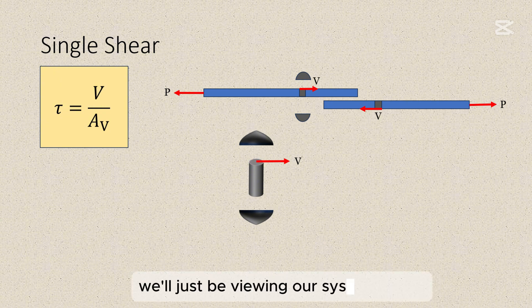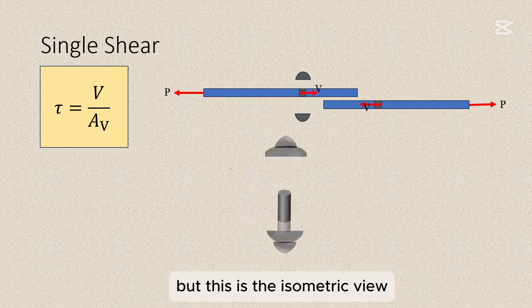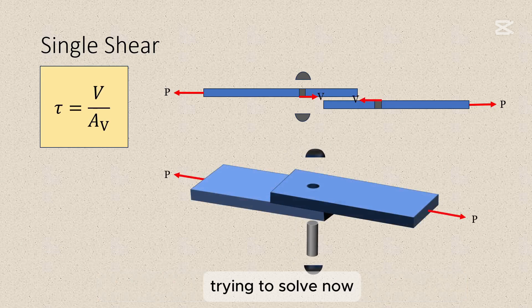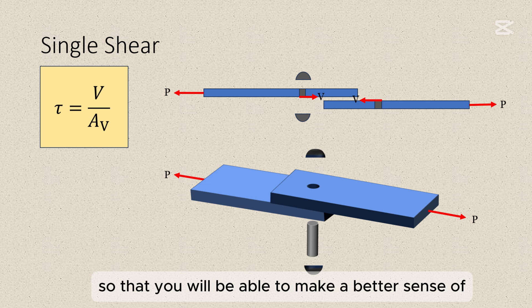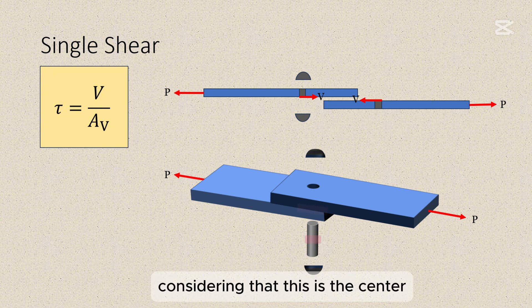Now in most cases, we'll just be viewing our systems in 2D, but this is the isometric view so that you'll be able to appreciate what we are trying to solve. Now I just removed the bolt heads so that you will be able to make a better sense of the part of the bolt subjected to shear, which is essentially this one. Considering that this is the center and then it will be at this point.